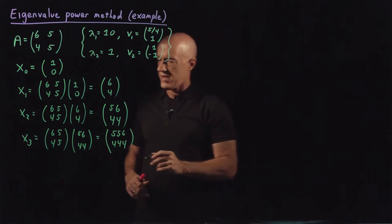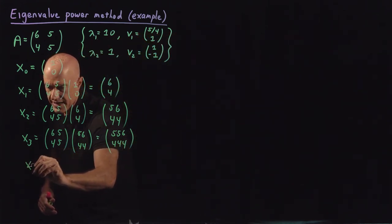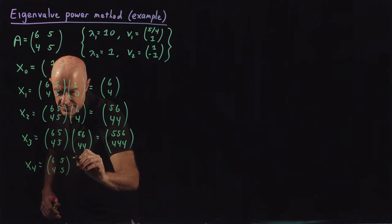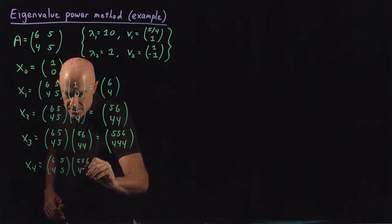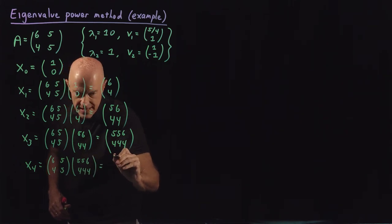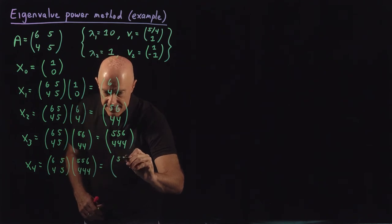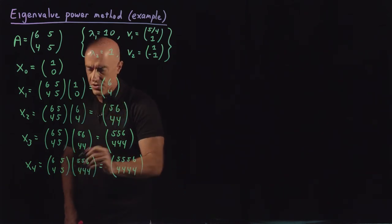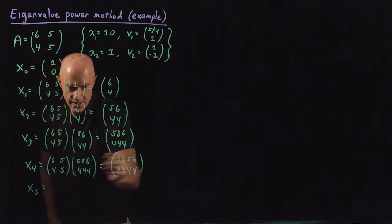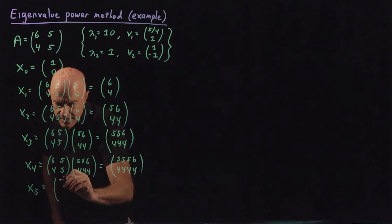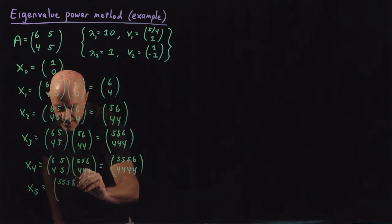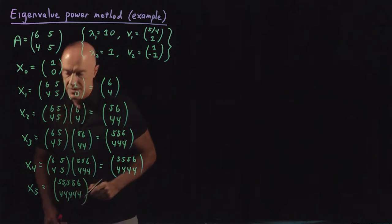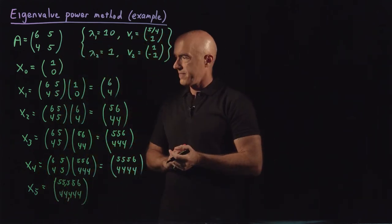So we're going to get larger and larger values. We need two more iterations. x4 will be [6, 5; 4, 5] times x3 = [556, 444]. There's a nice pattern here — x4 turns out to be [5,556, 4,444] and x5, multiplying again, will be [55,556, 44,444].